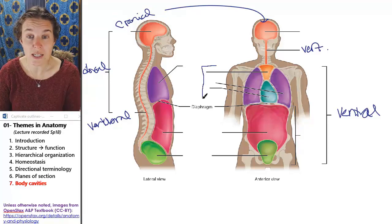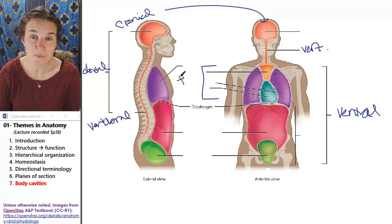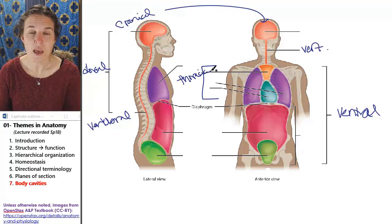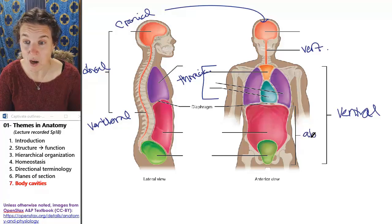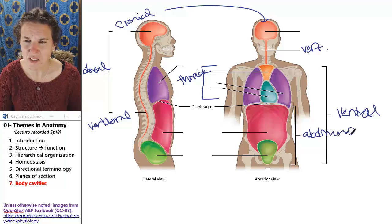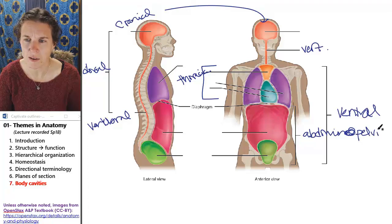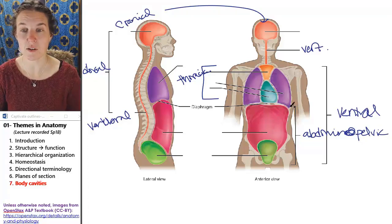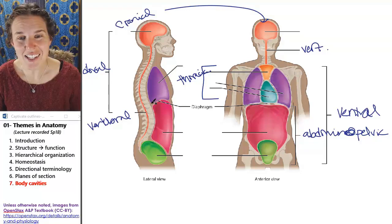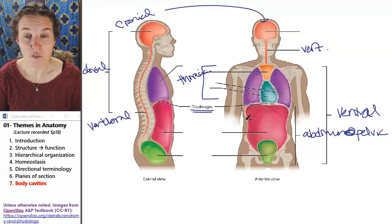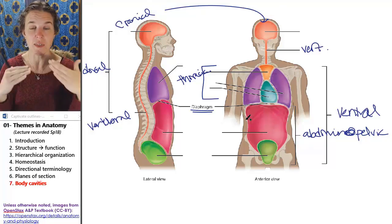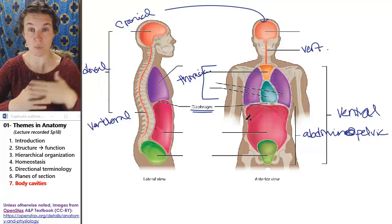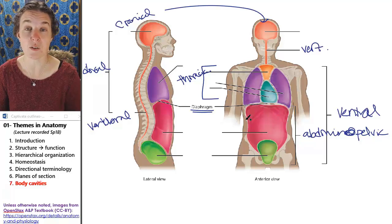The first one is the thoracic cavity. The thoracic cavity is separated from my second big one, which is the abdominal cavity. The thoracic cavity is separated from the abdominal pelvic cavity by the diaphragm. The diaphragm is a skeletal muscle that plays a role in breathing. And we're going to actually study that in this session when we do the respiratory system.